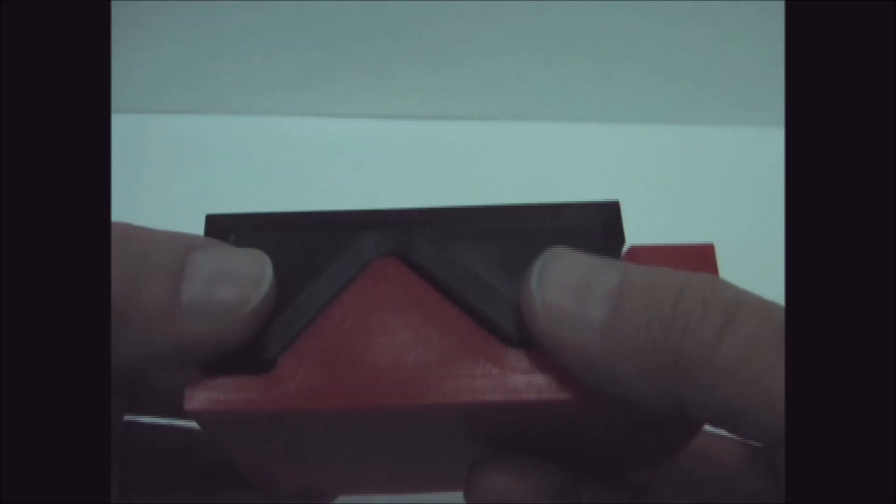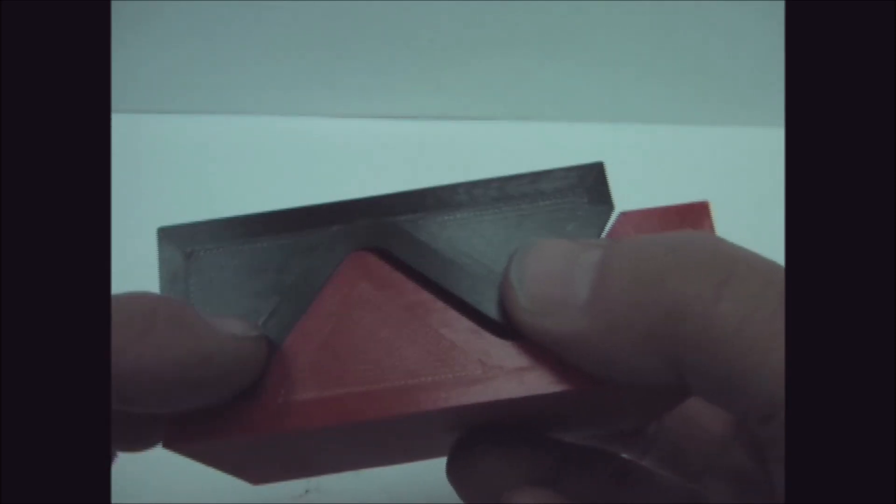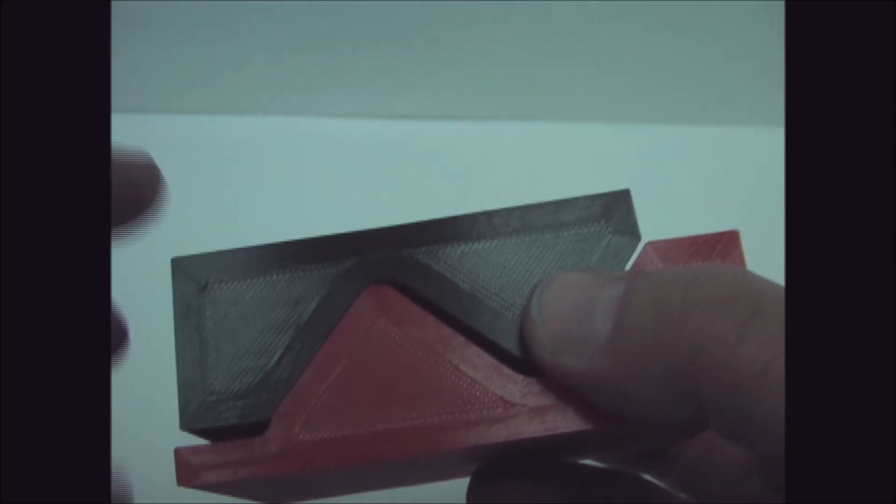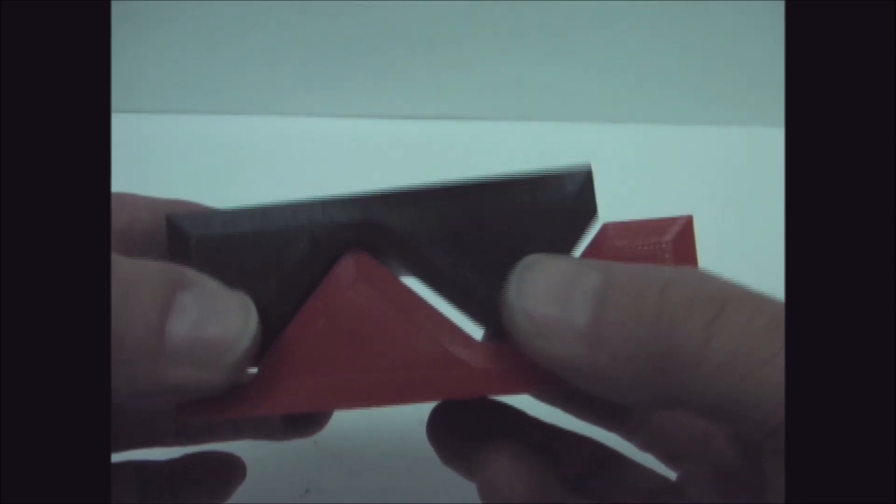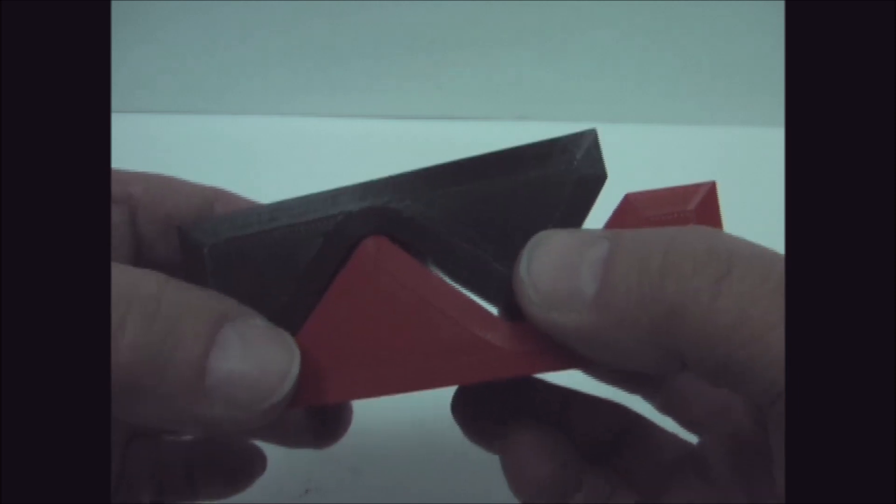I 3D printed some forms to bend the steel. They have 12 perimeters and 40% infill and they're made out of PLA, and I plan on using this in a hydraulic press.